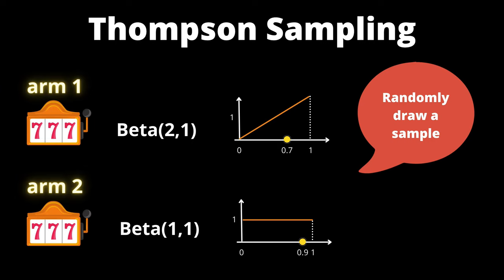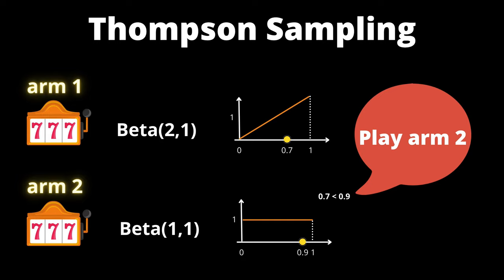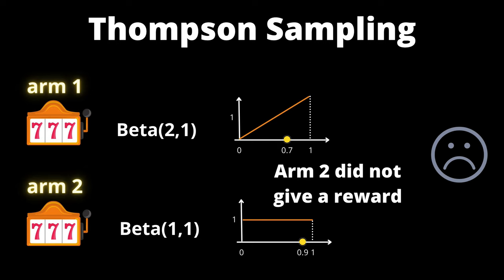With the unknown probability of 0.2, arm 2 will give us a reward. Let's assume that arm 2 failed to give us a reward. Then the posterior distribution for arm 2 updates to beta 1 2.